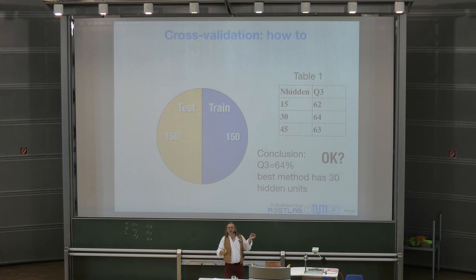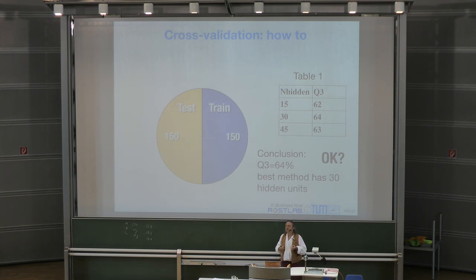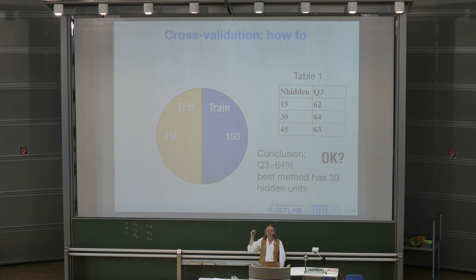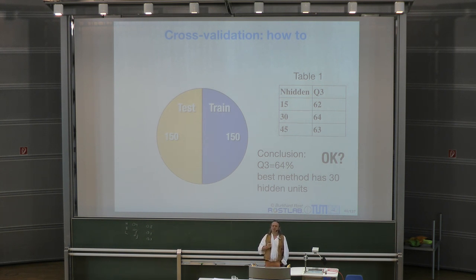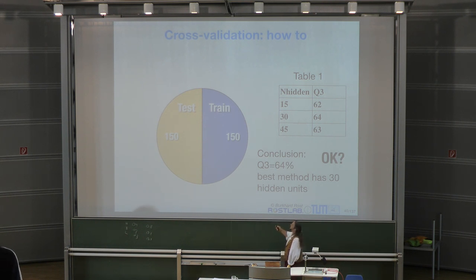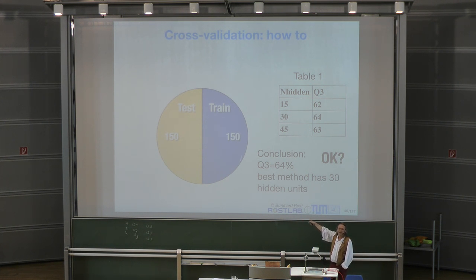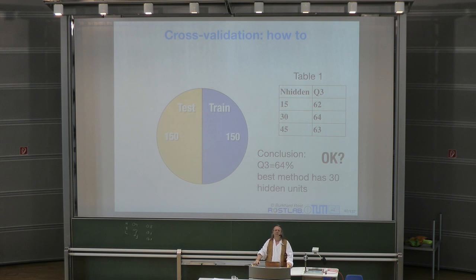It's a mistake that the vast majority of people who apply machine learning make. Most people never find out it's a mistake. But in computational biology, you have many people using these methods for many years, and over time you find out that almost nothing survives because of this type of problem. You need a more complex way of doing cross-validation.